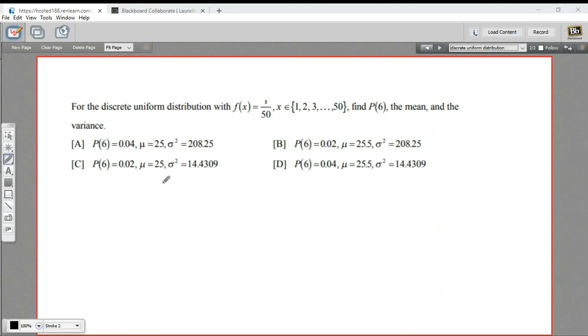In this case, they didn't give us a graph. The discrete uniform distribution is this function, 1 over 50 comma x, where x is the integers from 1 through 50. This is the same thing as that last one, except that n now equals 50. So the probability of getting a 6 in this distribution would just be 1 over n, or 1 over 50, or 0.02. So that's going to be our probability.